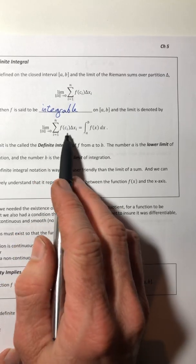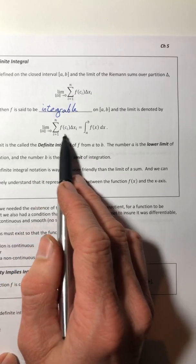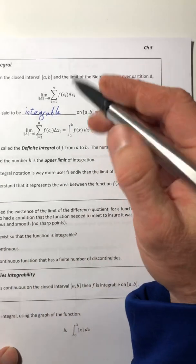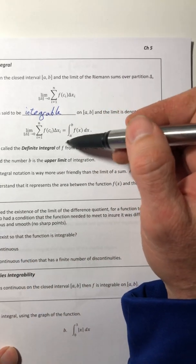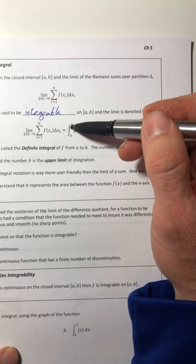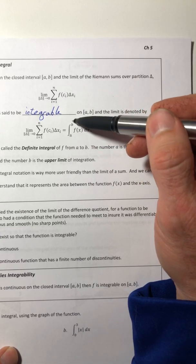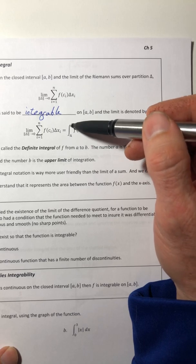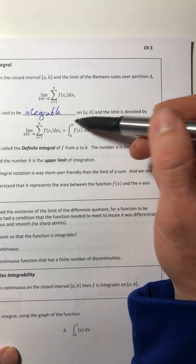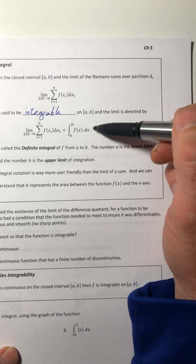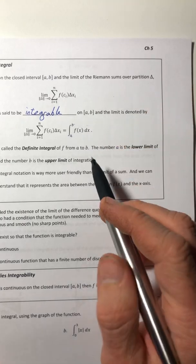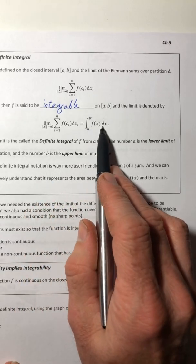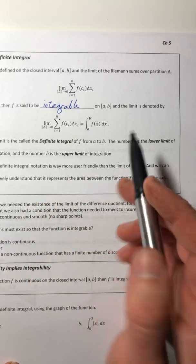then f is said to be integrable on that same interval, and then the limit is denoted by, so they're going to take this big limit, which is kind of a pain to keep writing, so they said, hey, let's get a different notation for this. So they went with a definite integral notation, so they took the integral symbol and then they put these numbers down below and up the top, so it's the integral from a to b of your function times dx,